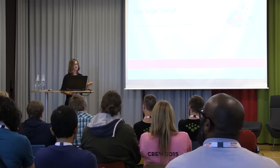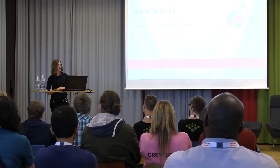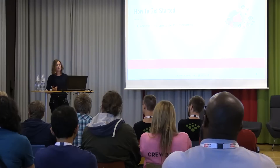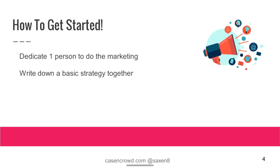This usually becomes the person who feels most comfortable connecting with other people online. If you're a small team, this could be 25% or 50% of their time — it doesn't need to be someone doing this 100%. You need to dedicate one person to be in charge of marketing and write down a basic strategy together. Don't just think 'oh, we will come up with something' or 'I'll tweet a couple of times per day.' Try to sit together as a whole team and write something down — what channels do you want to be on, what messages do you want to provide your players with? It doesn't have to be a Bible, just a couple of pages.